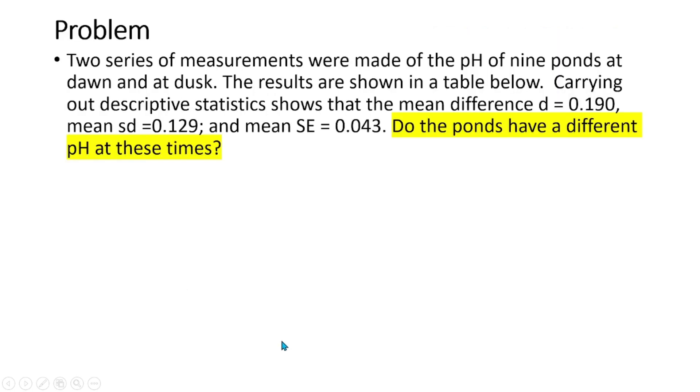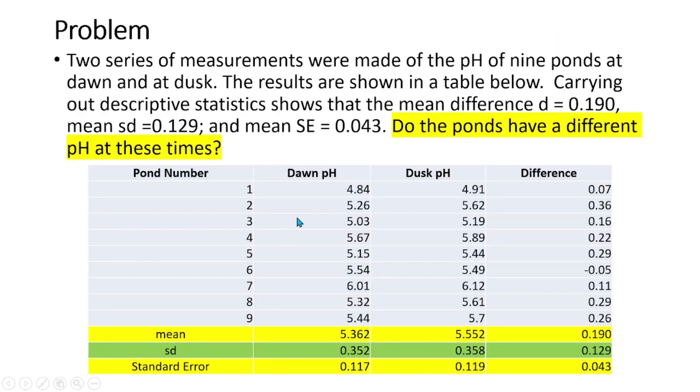Here we have data on the pH or level of hydrogen ion concentration from 9 ponds during dawn and dusk. A descriptive analysis of the data revealed a mean difference of 0.190, a standard deviation of the difference which is 0.129, and a mean standard error of the difference which is 0.043.